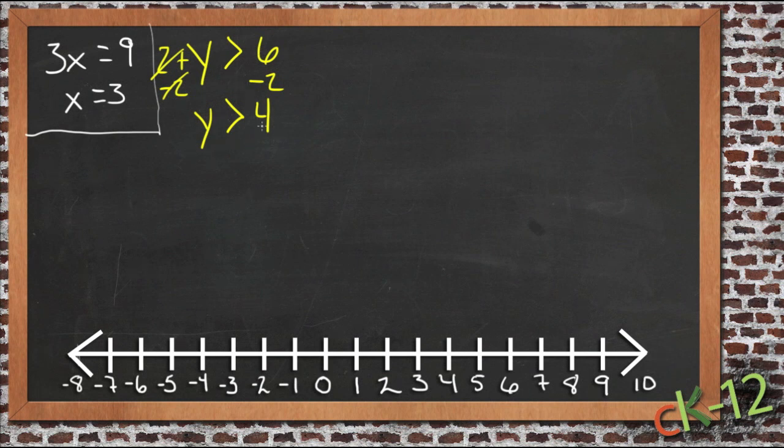Now if we want to graph this information and get a pictorial representation of it, we just find the number that we have it compared to, 4 in this case. We look at our sign. This sign doesn't say that it equals 4, just that it's greater than. So we draw an open circle at 4 and then we shade in what the variable can be. Y can be anything bigger than 4, so we shade in anything bigger than 4.